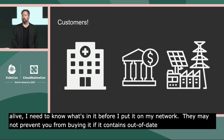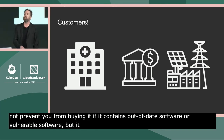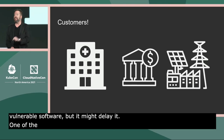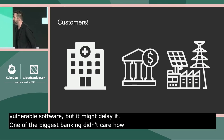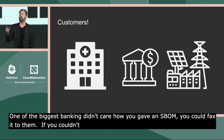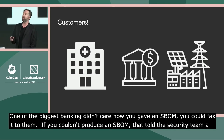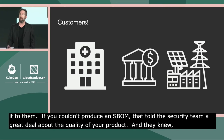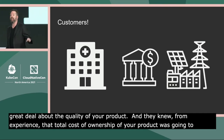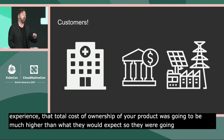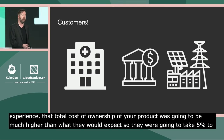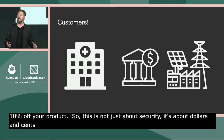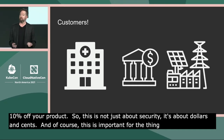One of the largest banks in America has been asking for SBOMs for years — even before we started to standardize the tech. They didn't care how you gave them the SBOM; you could fax it to them. But if you couldn't produce one, that told their security team a great deal about the quality of your product, and they knew the total cost of ownership would be higher — so they'd take five to ten percent off the asking price. This is not just about security; it's about dollars and cents.